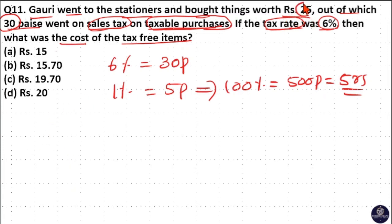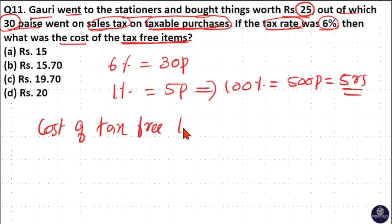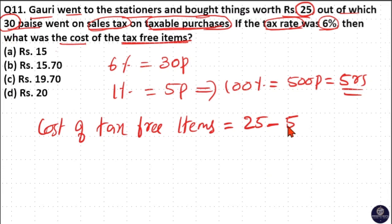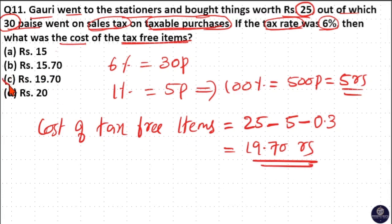Gauri totally purchased for 25 rupees, out of which 5 rupees is for taxable purchases and 30 paise went on sales tax. So the remaining is the cost of tax-free items. 30 paise means 0.3 rupees, so the total is 19.7 rupees. So option C is your answer.